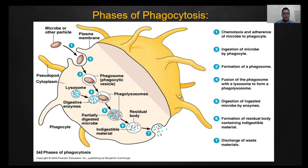Fourth, fusion of the phagosome with a lysosome to form a phagolysosome. This lysosome contains lysosomal enzymes which will digest the ingested particle. Fifth, digestion of the ingested microbes by the lysosomes. Sixth, formation of a residual body containing indigestible material. And seventh, discharge of waste material. Also, some parts of the ingested microbes will be retained later in the process of presenting antigens to the T cells.